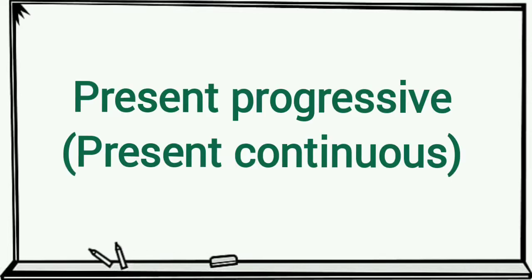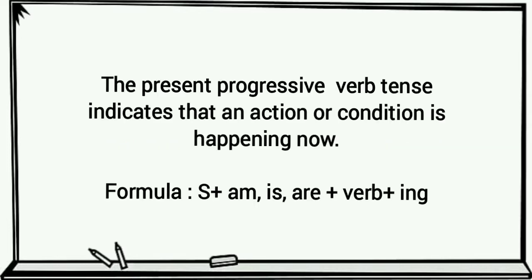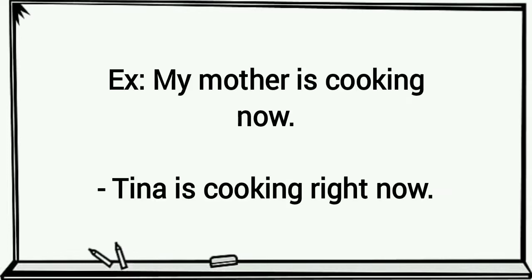Present progressive. The present progressive verb tense indicates that an action or condition is happening now. Example: My mother is cooking now. Tina is cooking right now.